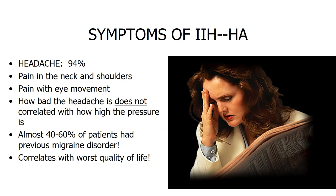Headache is the most common and most disabling symptom. It can be associated with pain on eye movement. Importantly, headache severity does not correlate with how high the intracranial pressure is — you can have very high pressure and almost no headache. About 40 to 60 percent of patients with IIH have a pre-existing migraine disorder, and nearly half of all IIH patients have underlying headache or migraine, which correlates with worse visual quality of life.